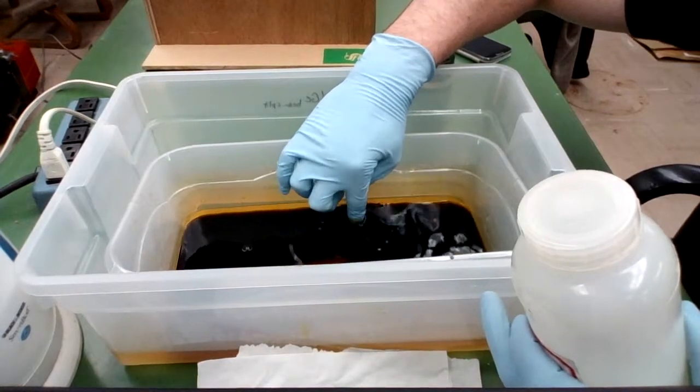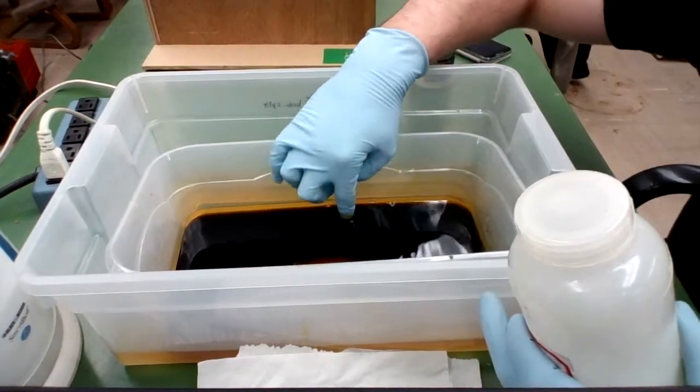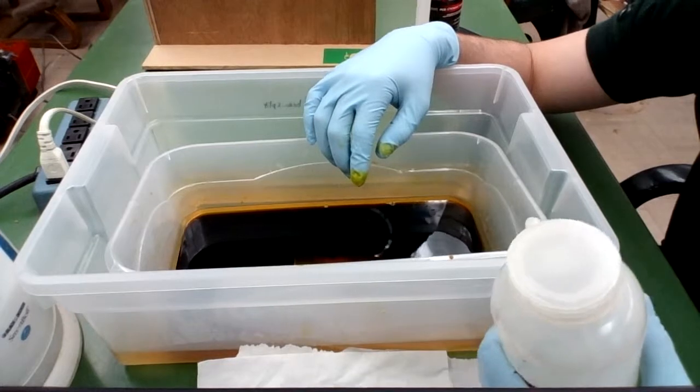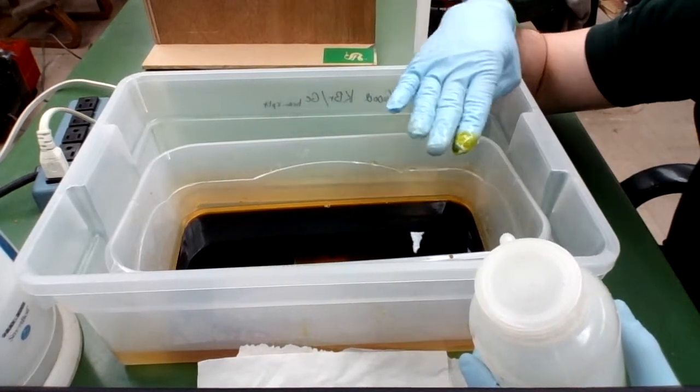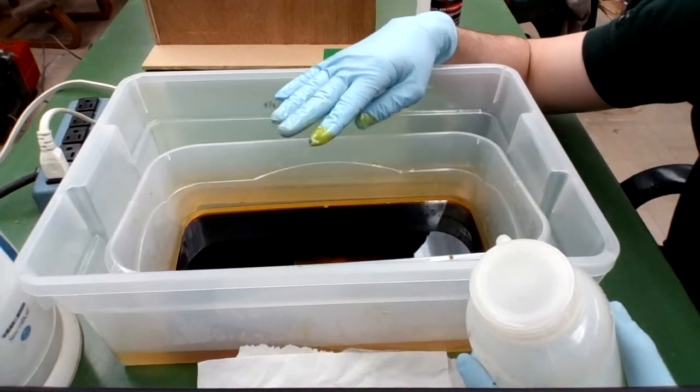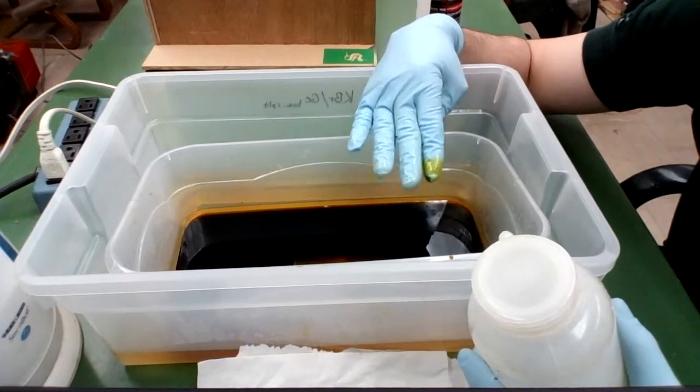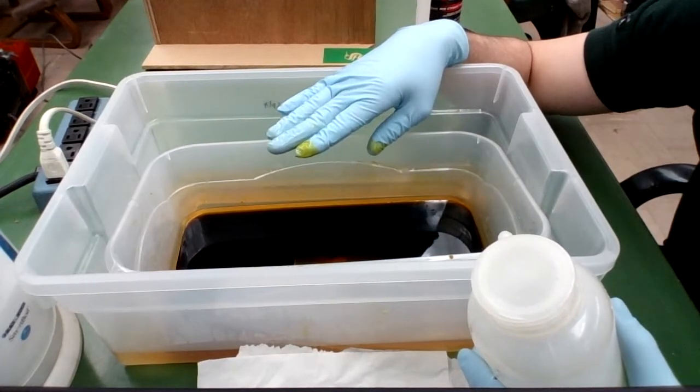So the reason we're etching all the way down to our fiberglass layer is so that we have a completely flat photoresist and then 42 micrometers beneath that, a completely flat fiberglass layer.